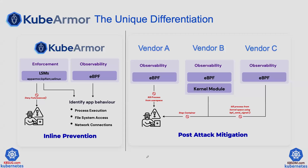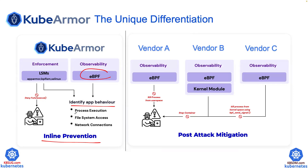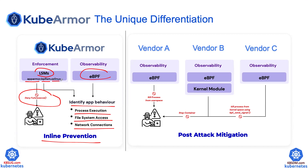What's unique about KubeArmor? Based on my understanding, across the whole market right now, only KubeArmor does inline intervention — you can leverage zero trust. How it works: it leverages eBPF for observability to identify the application behavior. I just need three processes, I only need to access two files, I only need to access two network ports. I understand the application behavior, I give that access, then I deny everything else. How to deny? It leverages the LSM module — could be AppArmor, BPF-LSM, or SELinux.